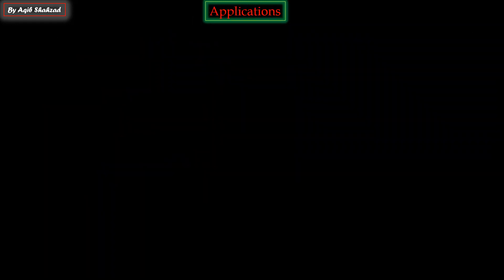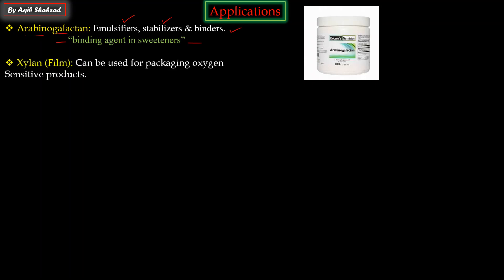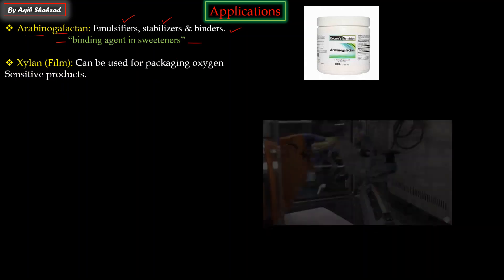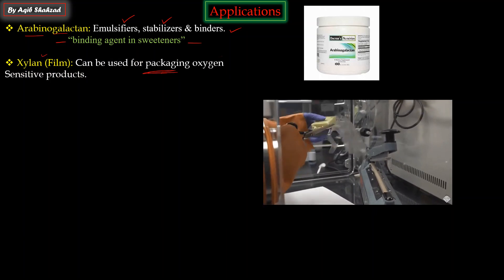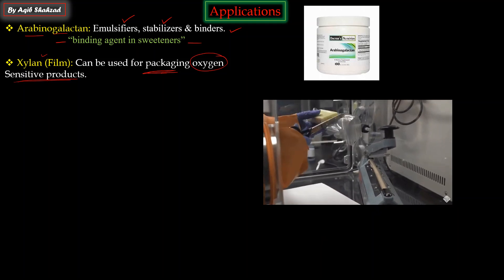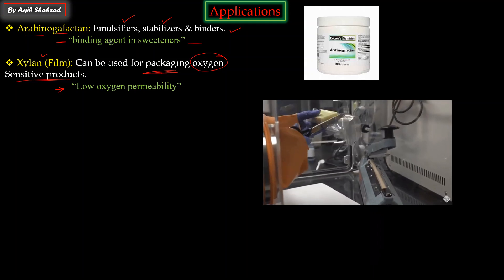Some applications of hemicellulose: First, arabinogalactan is a type of emulsifier, stabilizer, and binder used as a binding agent in bakery, confectionery, and the food industry. Xylan forms a film which can be used for packaging - particularly for oxygen-sensitive products - because it has low oxygen permeability, meaning it does not allow much oxygen through, keeping products safe.